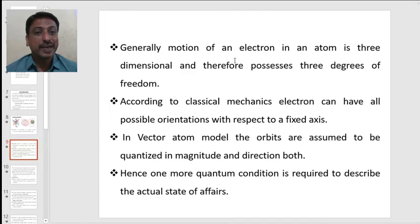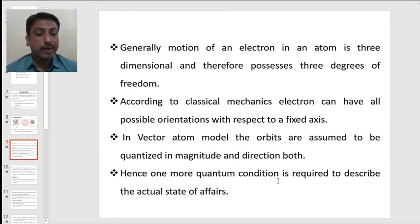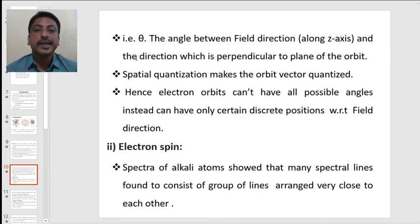Motion of an electron in an atom is three-dimensional and therefore possesses three degrees of freedom. According to classical mechanics, electron can have all possible orientations with respect to a fixed axis. In vector atom model, these orbits are assumed to be quantized in magnitude and direction both. Hence, one more quantum number is required to describe the actual state of affairs and it is denoted as θ.